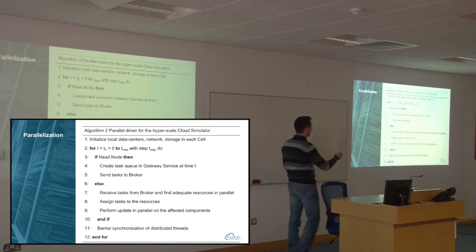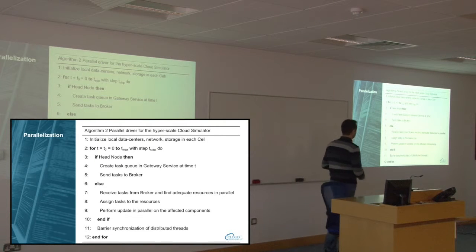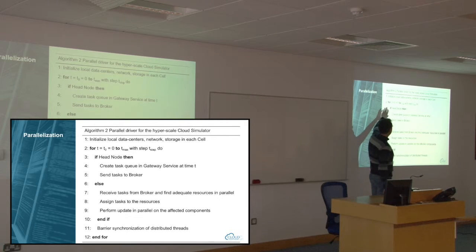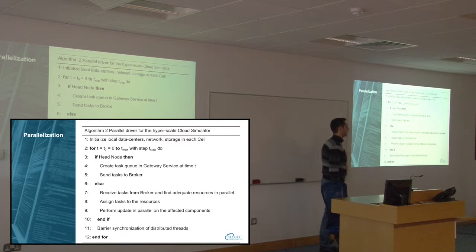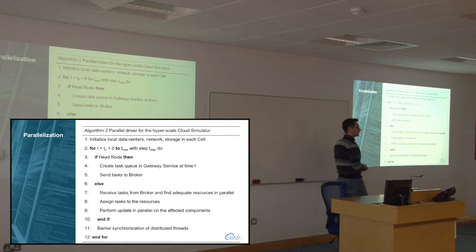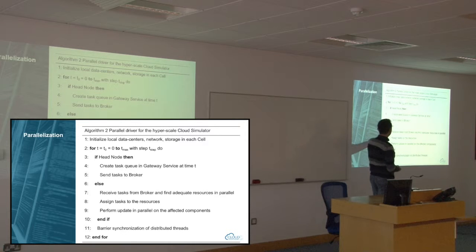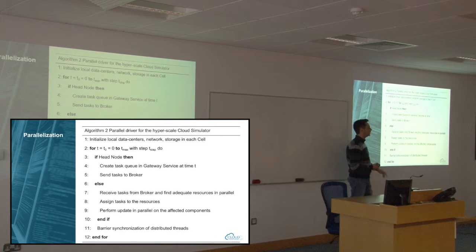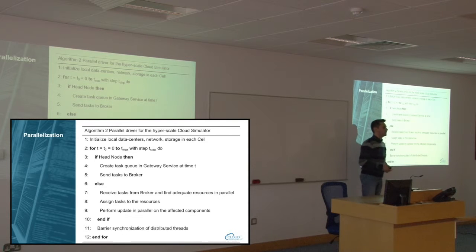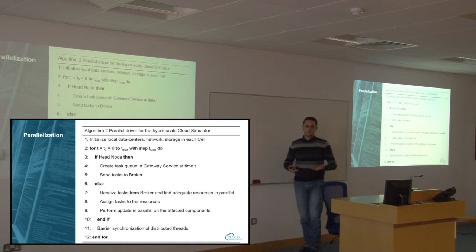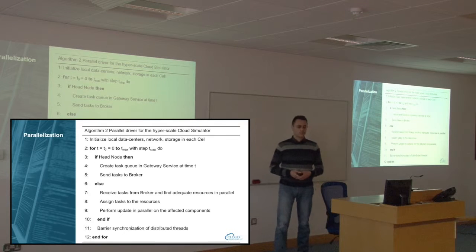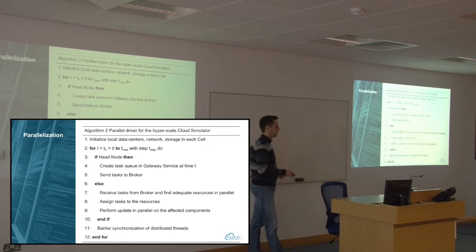In a more detailed driver, steps 3 to 6 represent the tasks that the shared head node — the gateway service — runs, and the rest of the tasks are what each cell does. We need MPI synchronization at the end in order to synchronize all the distributed processes to proceed to the next time step.